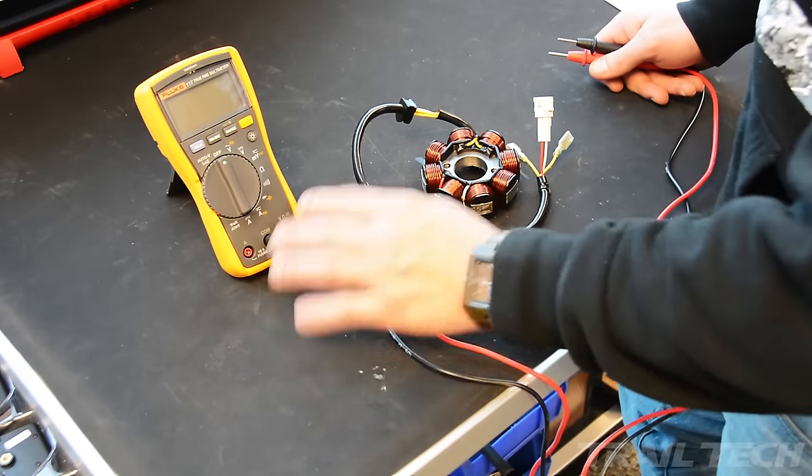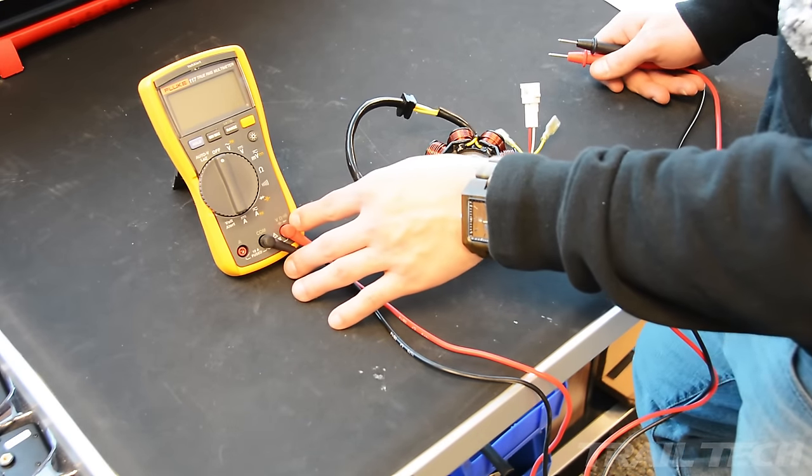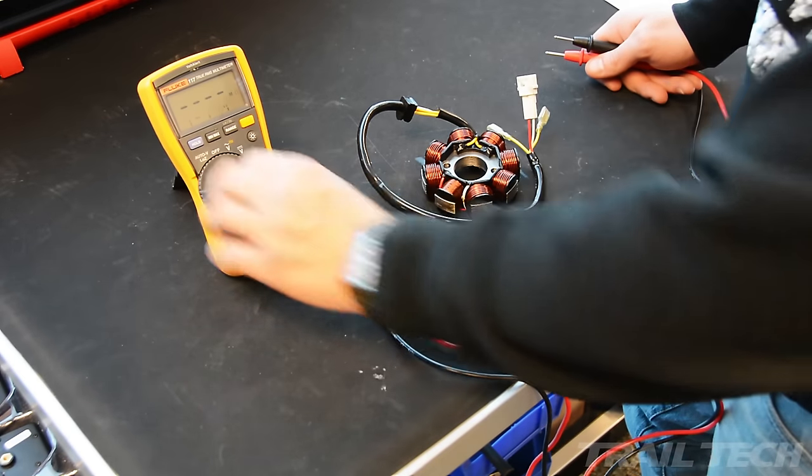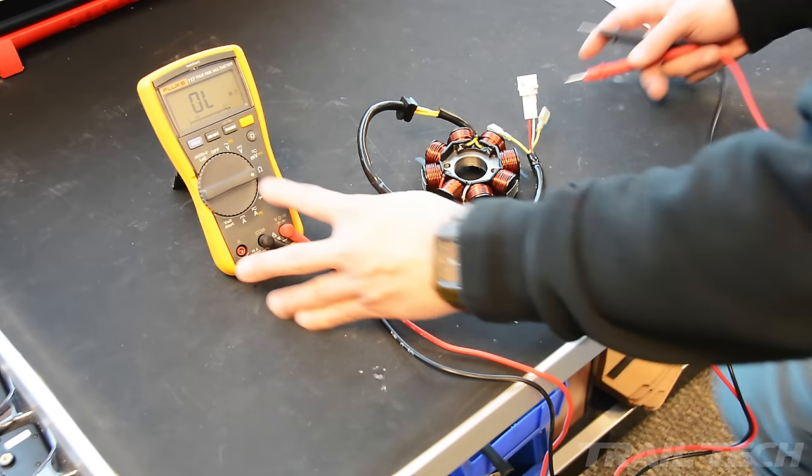So just take your meter. Again, make sure you're in the right positions here. You want to be set to the ohms, volts, and continuity setting, not the amps. Move your meter to the ohms symbol. It kind of looks like an upside-down horseshoe, the omega symbol.